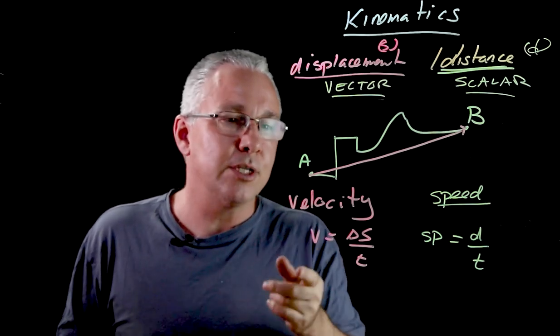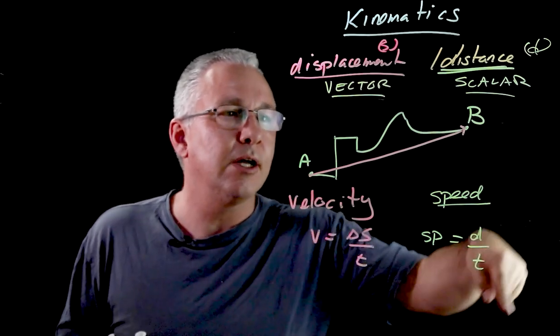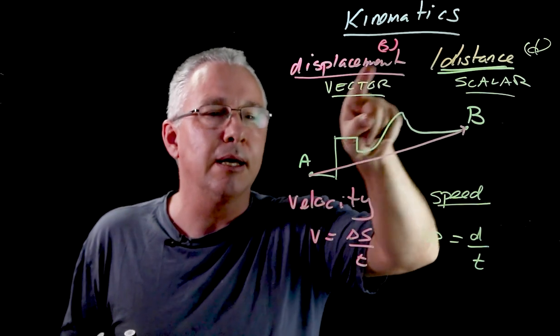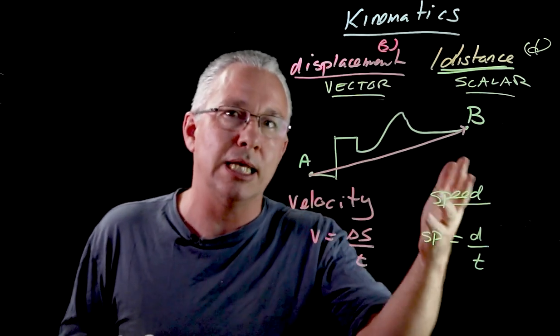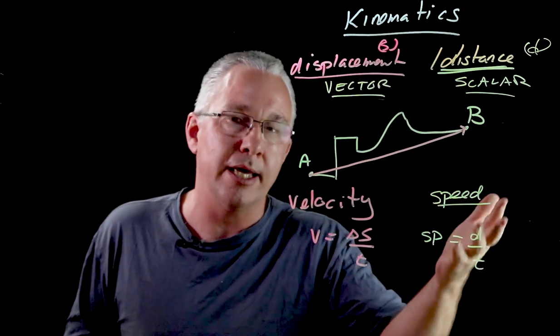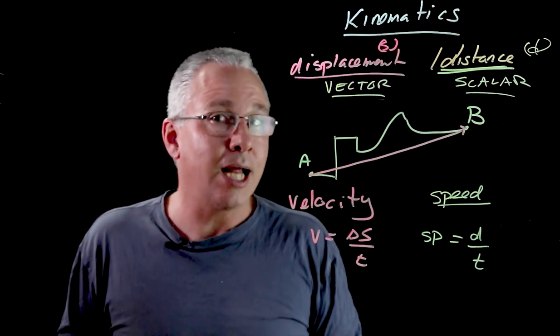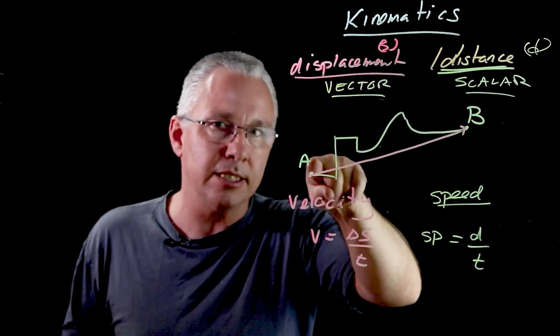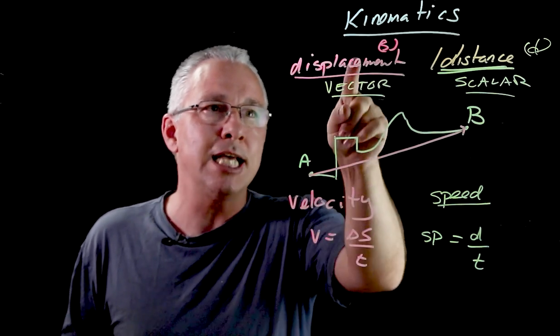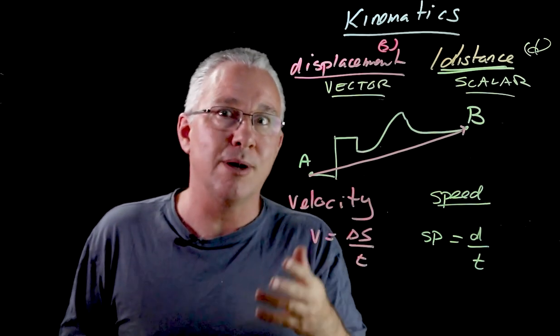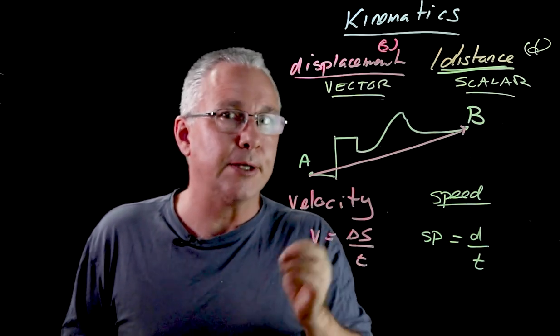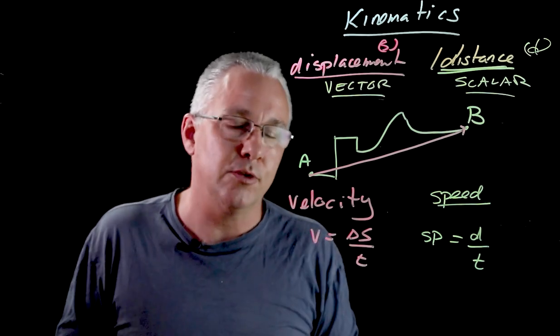So imagine this if I were to let's say start from A and run all the way around B and come back to A, my distance is quite large and my speed can be quite high in terms of its average speed. But I could argue that well I'm back to the original point so my displacement is zero. Well if my displacement is zero my average velocity ends up being zero. So you can see the difference between the two.